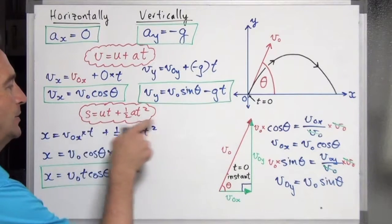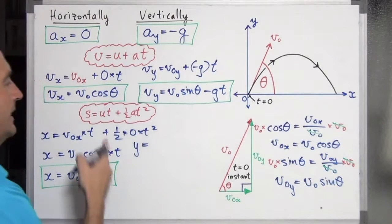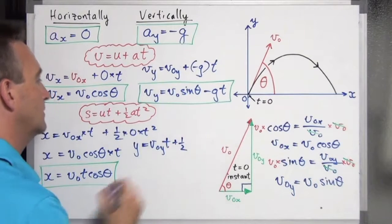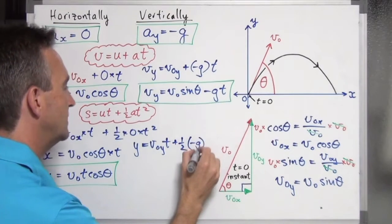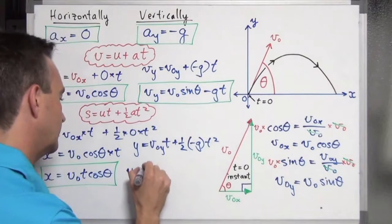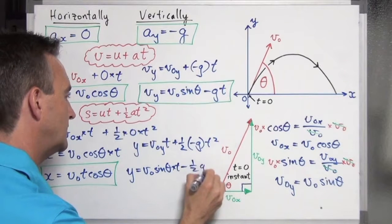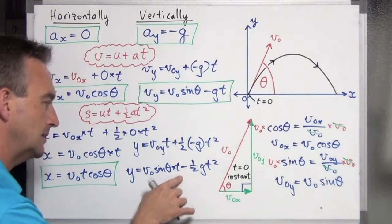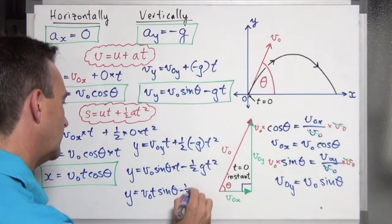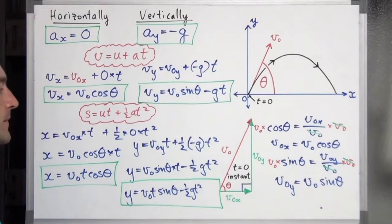For the sixth and final equation, we use the SUVAT displacement equation in the vertical direction. Vertical displacement is y, initial vertical velocity is v0·sin θ, and the vertical acceleration is minus g. So: y = v0·sin θ·t − ½g·t². Rearranging: y = v0·t·sin θ − ½g·t². That is the sixth and final equation of projectile motion.